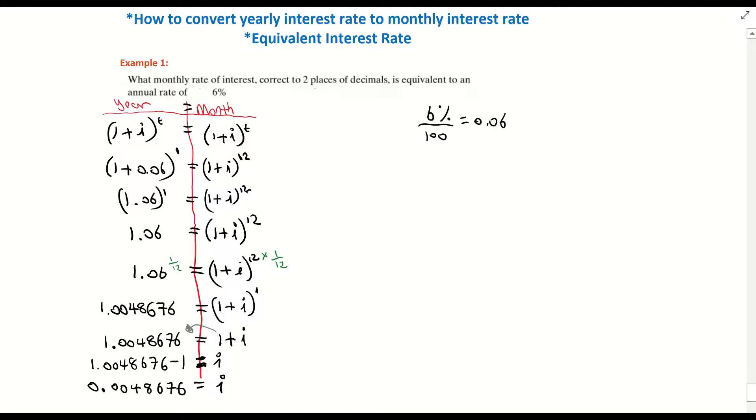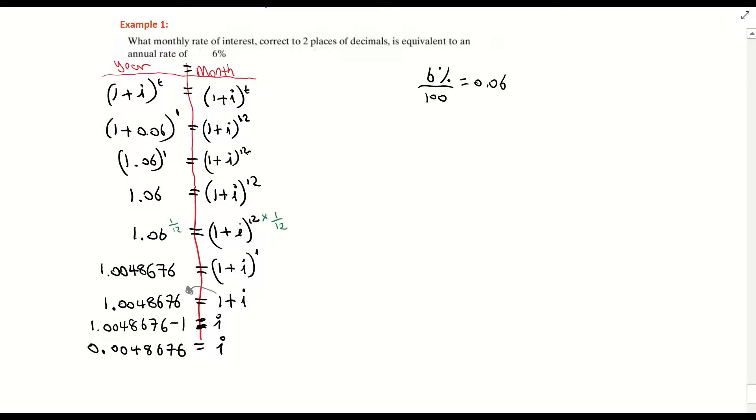1.0048676 take away 1 is just 0.0048676 equals i. We want our interest rates as a percentage. So in order to turn this into a percentage, I just need to times by 100. And multiplying that by 100 is giving me 0.48676 equals i. And the question wanted it to two decimal places. So therefore, i equals 0.49%. So there's our first example.